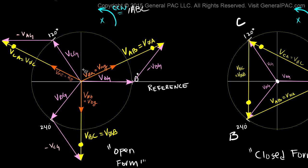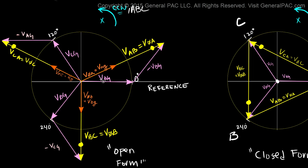In our phasor diagram, we're comparing this VAG — which is the high voltage reference quantity — with VAG on the low voltage side. We're comparing this high voltage reference quantity with this low voltage reference quantity to determine the phase shift. For this transformer connection, it's pretty obvious that the phase shift between the high voltage side and the low voltage side is 30 degrees. The question is how this transformer designation actually works with respect to our phasor diagram.